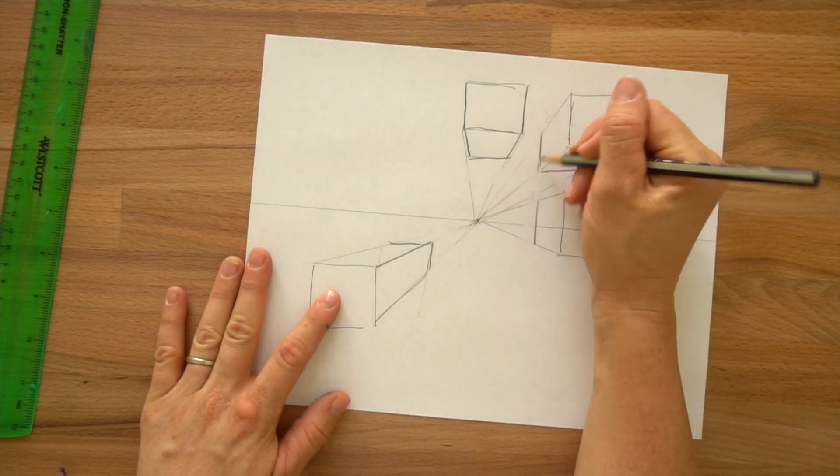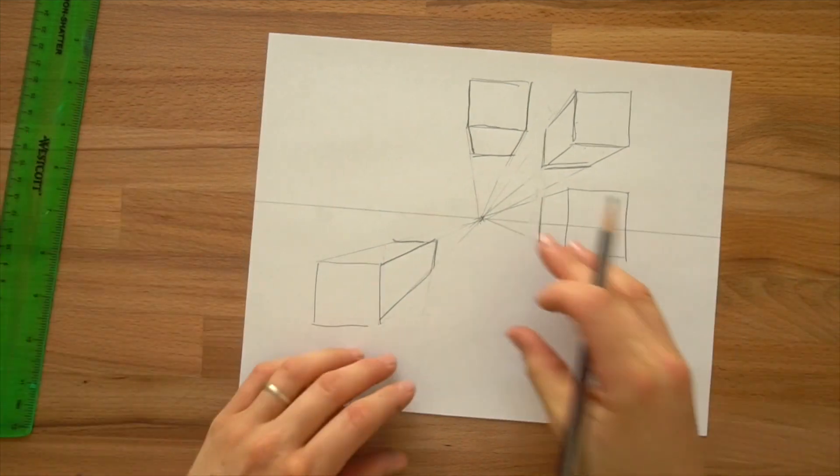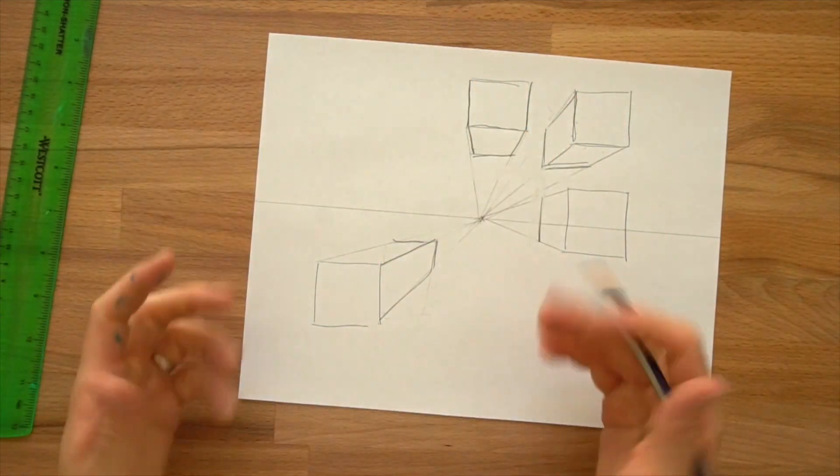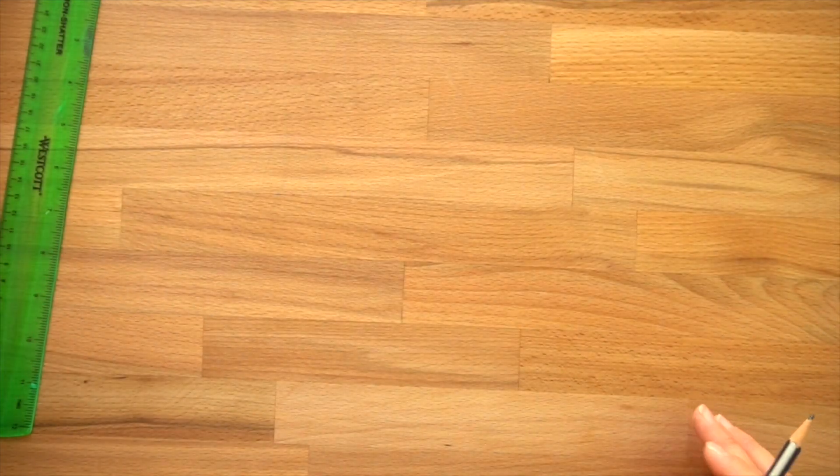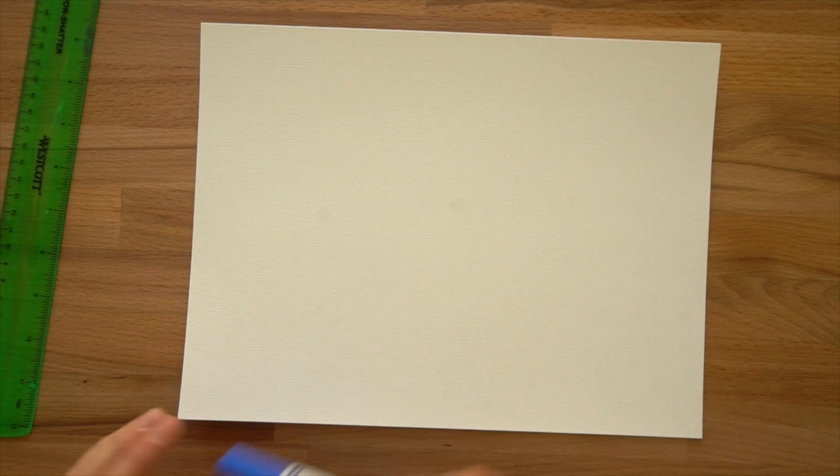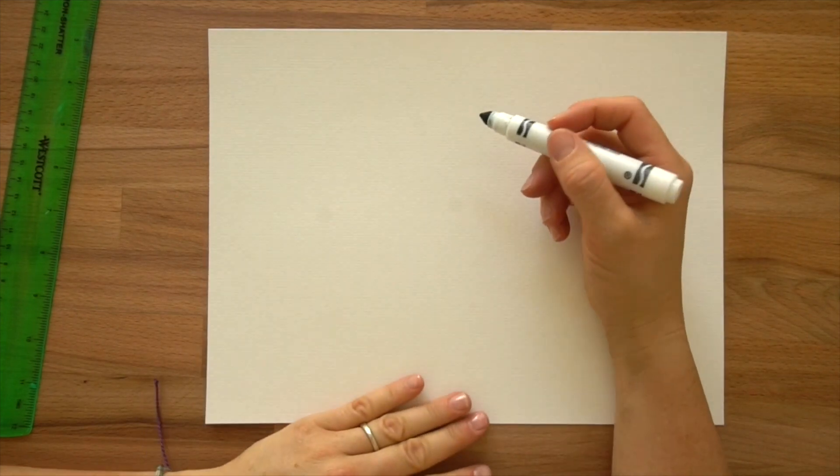The next thing we're going to be doing using this method, I call it the exploding boxes because we're going to be drawing a ton of boxes that are shooting up out of a vanishing point. We want to do this on watercolor paper or drawing paper if that's all you have. We are going to be using markers for this. I might just use a black marker to change things up a little bit. So grab your watercolor paper.